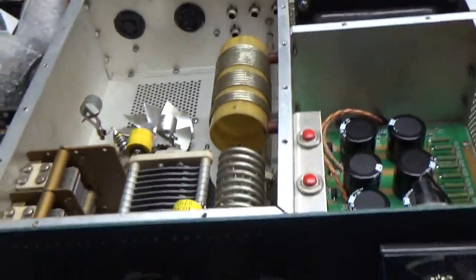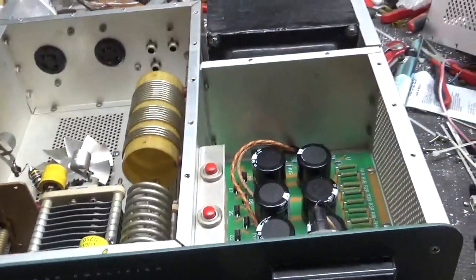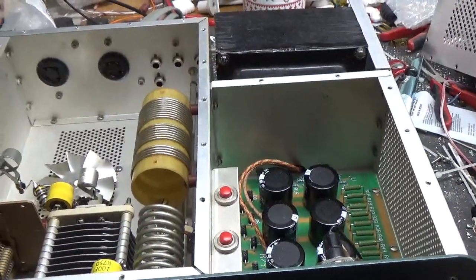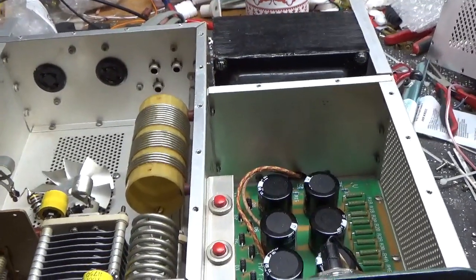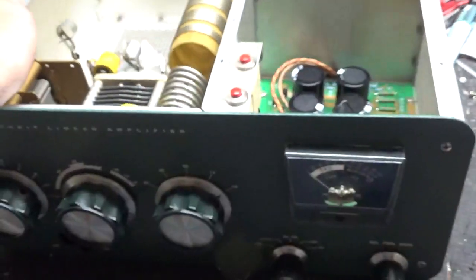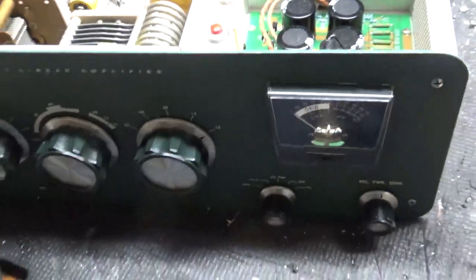The wire going from the input connector to the TR relay which was changed is very rigid, so it causes the relay to not easily engage, so I will change that with a more flexible wire.